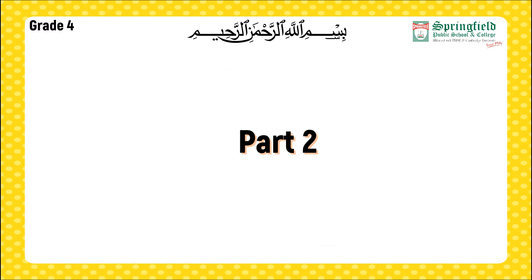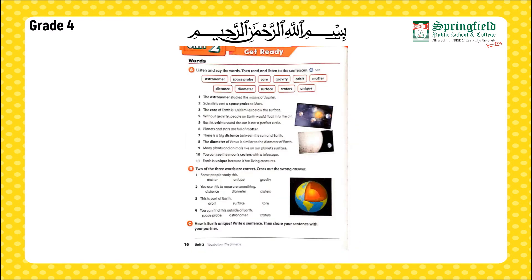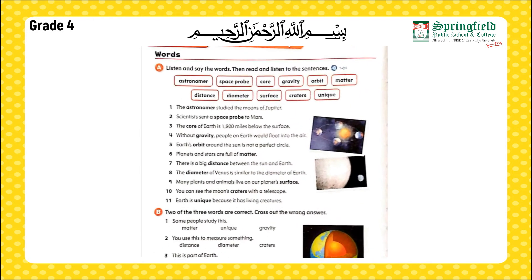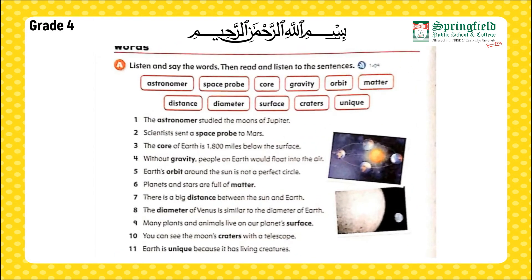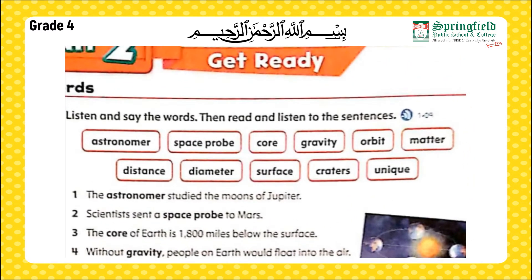Moving towards our Oxford Discover student book, Unit 2, page number 16. In Part A, we listen and say the words, then read and listen to the sentences. You have to listen to me very carefully and repeat each word after me. We also have sentences for these words.